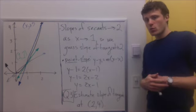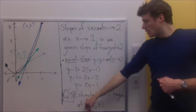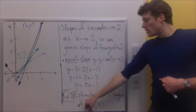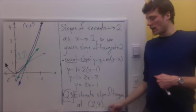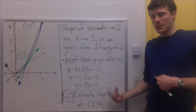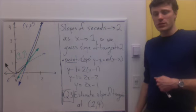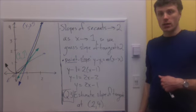Now, here's the third question for this series of lectures: would you please estimate the slope of the tangent line at the point (2, 4), doing the exact same thing that we just did to estimate the slope at (1, 1)?